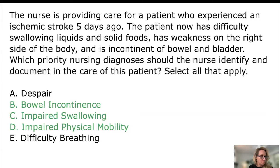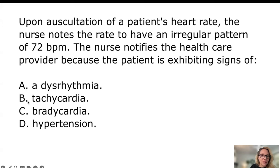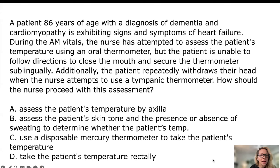Next question: a nurse auscultates a heart rate with an irregular pattern at 72 beats per minute — the nurse notifies the provider because the patient is exhibiting signs of what? Choices are dysrhythmia, tachycardia, bradycardia, and hypertension. Normal heart rate is 60 to 100, so 72 is not tachycardia or bradycardia, and this has nothing to do with blood pressure. Even without knowing the answer outright, the irregular pattern makes it a dysrhythmia.